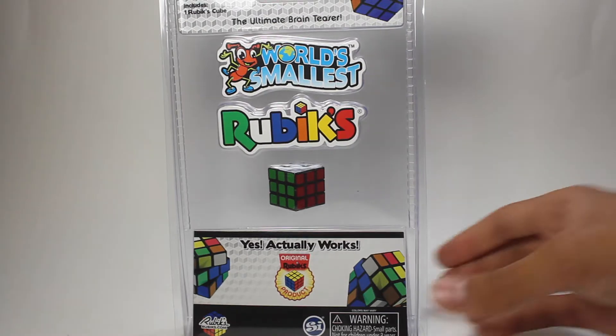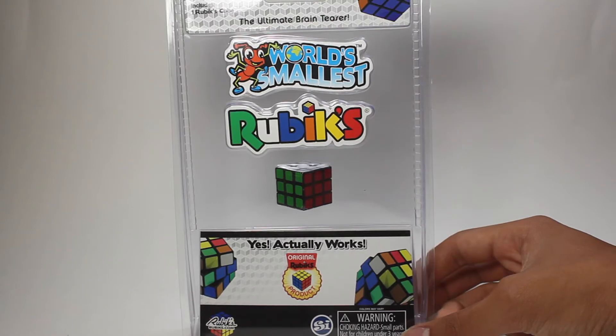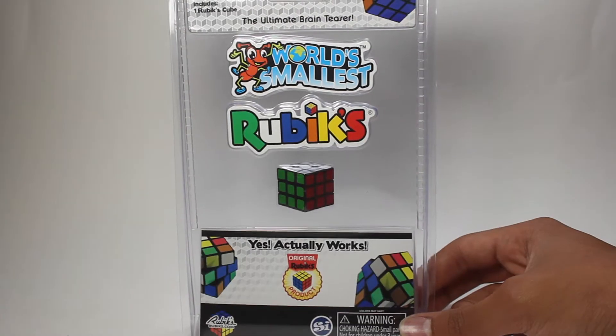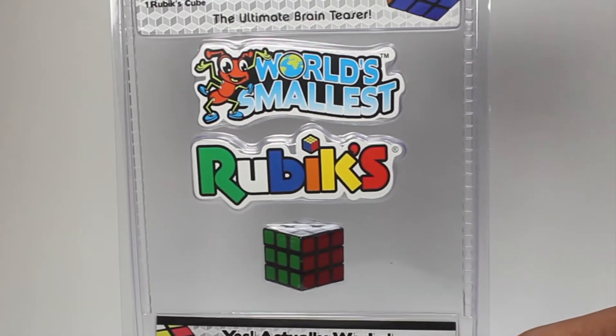I was in the toy section of Target, and I saw this little guy right here hanging around. It was in the very back of the shelving. It was a pretty big find. I kind of dug, and I've never seen such a thing before. This is the world's smallest Rubik's Cube, at least this is what they claim.